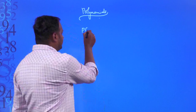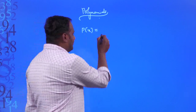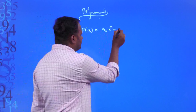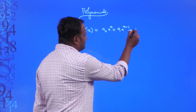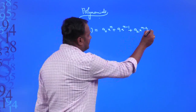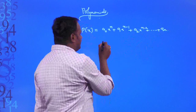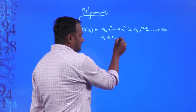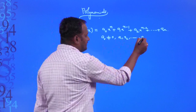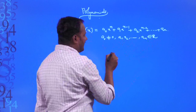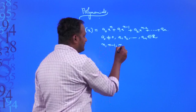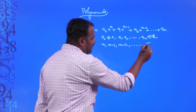First of all, let us try to recall what is meant by a polynomial. Let us consider an algebraic expression in terms of x: a₀xⁿ + a₁xⁿ⁻¹ + a₂xⁿ⁻² + ... + aₙ, where a₀ is not equal to 0, and a₀, a₁, a₂, ..., aₙ are real numbers, and n, n-1, n-2, and so on are non-negative integers.